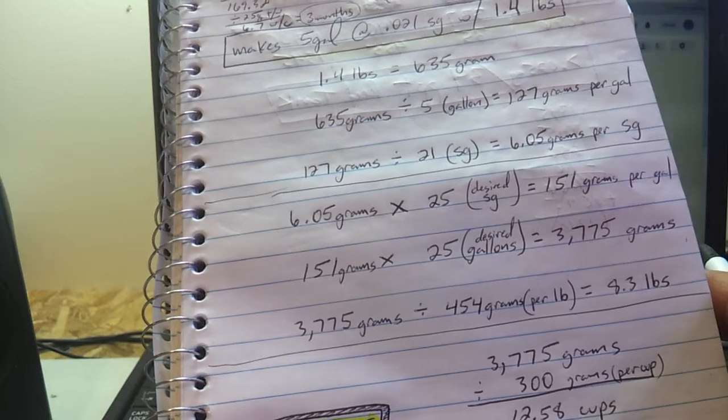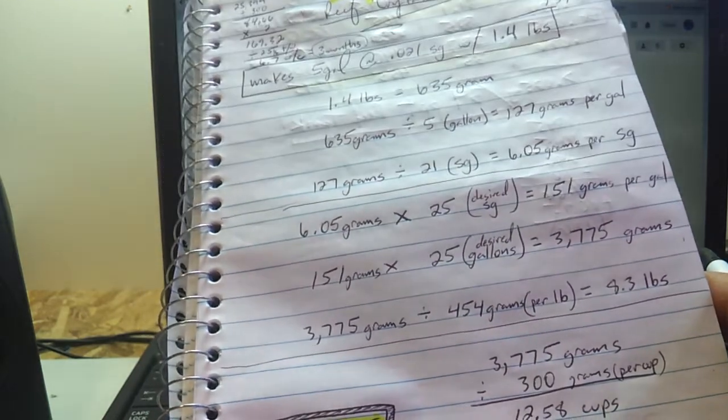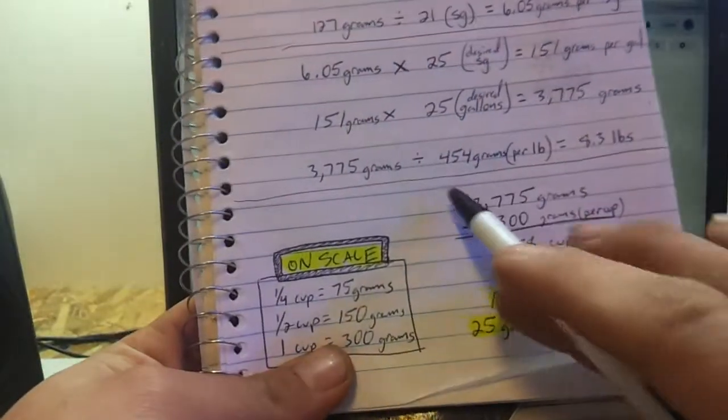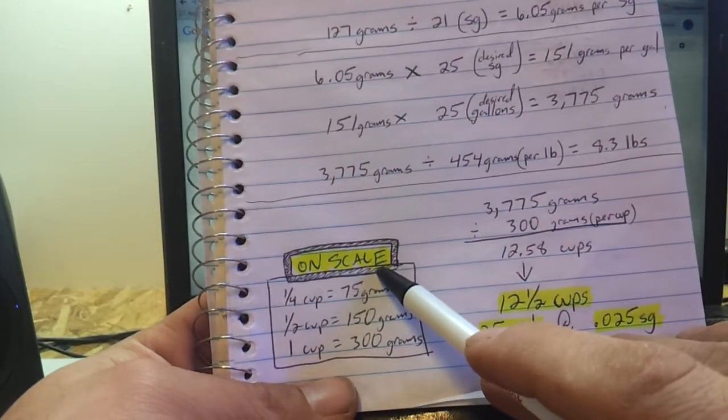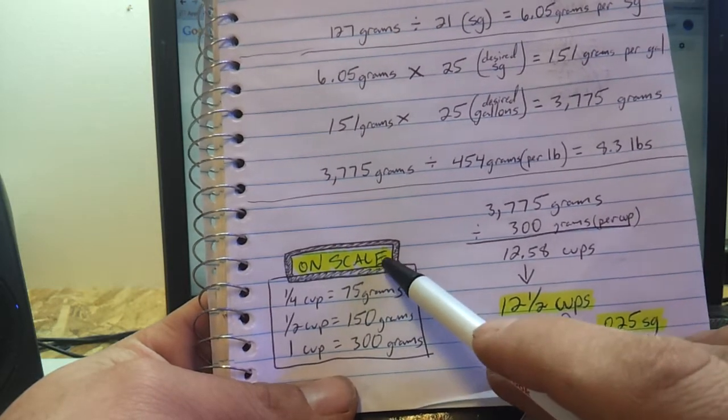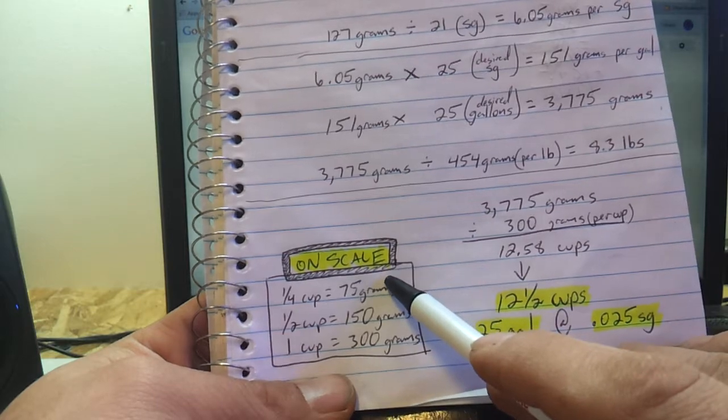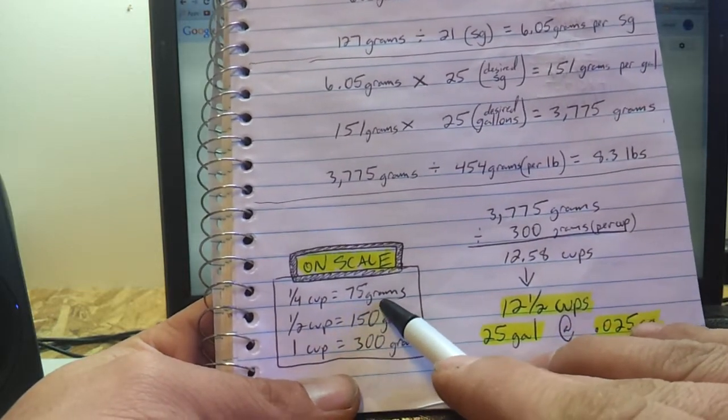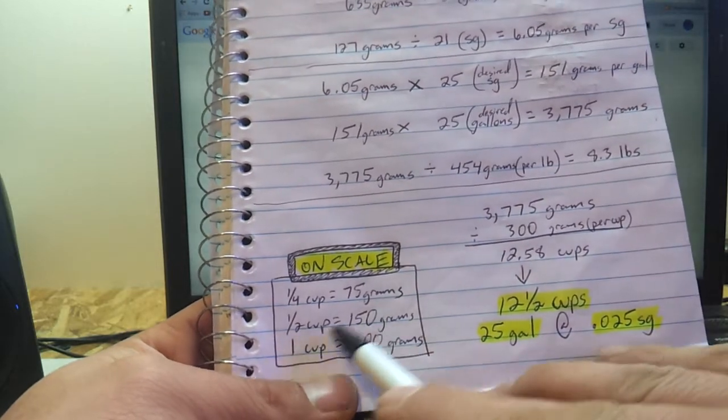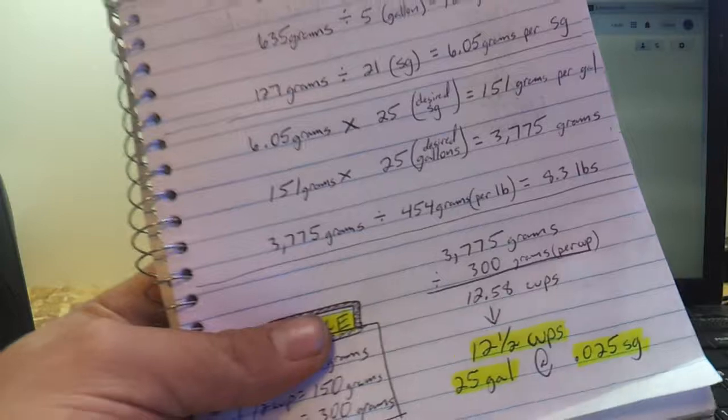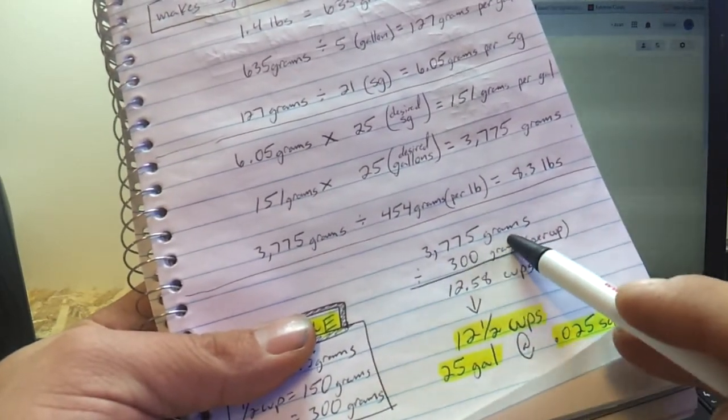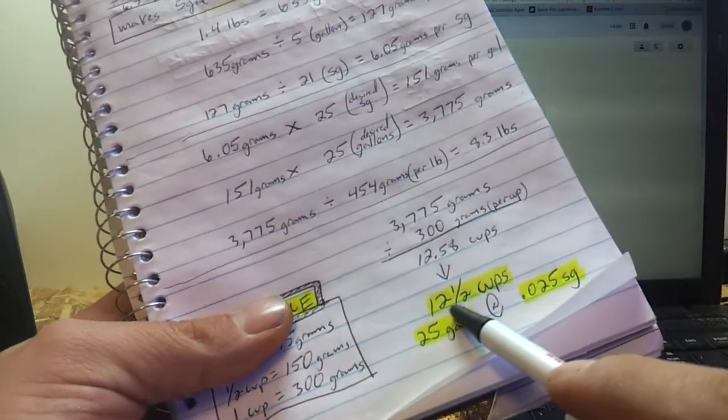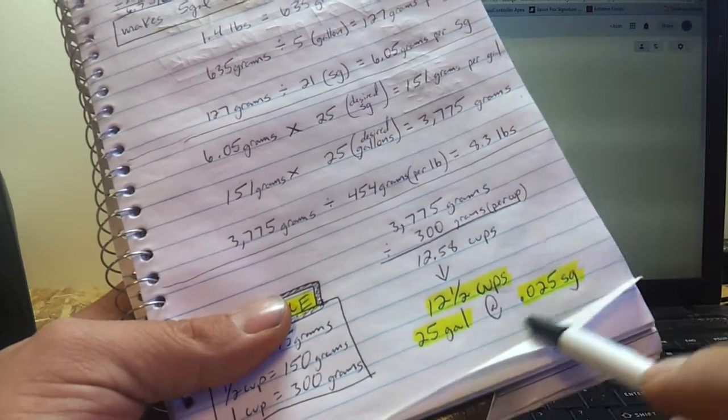Now the side of the bucket tells you 1.4 pounds is supposed to give you specific gravity of 21. It doesn't really break it down into cups because we all use cups to mix our salt. So you got to figure out what does that break down to into cups. Now I have one of those small digital scales for jewelry or whatever. You can pick them up at a tobacco shop. I actually put a quarter cup onto the scale and it weighed 75 grams exactly. So I did the math: half a cup 150, one cup 300. So the 3,775 grams I divided that by 300 grams which gave me 12.58 cups, which I roughly broke it down to 12.5 cups to make 25 gallons at a salinity of 25.